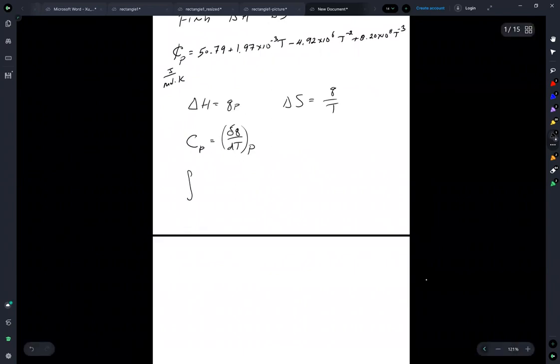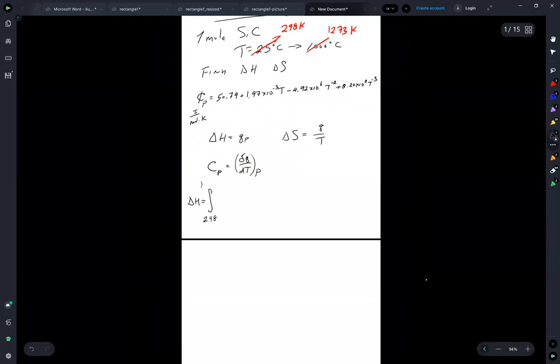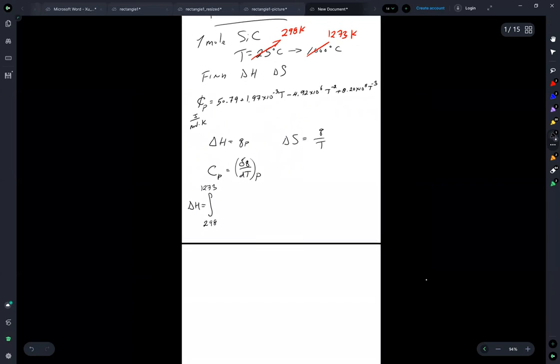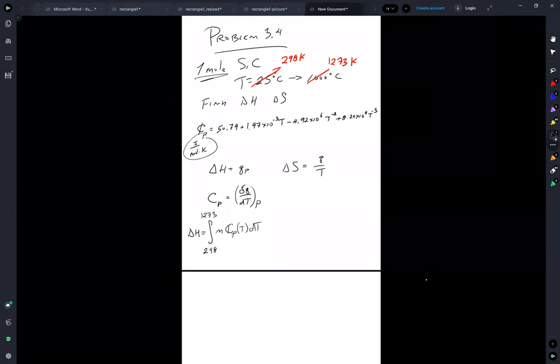Delta H is the integral from 298 to 1273 of N Cp T DT. And, of course, the problem gives us the molar heat capacity and one mole, so we can just directly substitute. Then delta H is equal to the integral from 298 to 1273 of Cp T DT. And then we've got a polynomial.